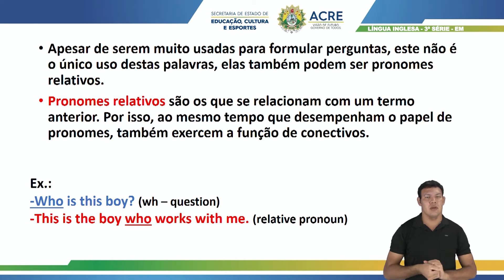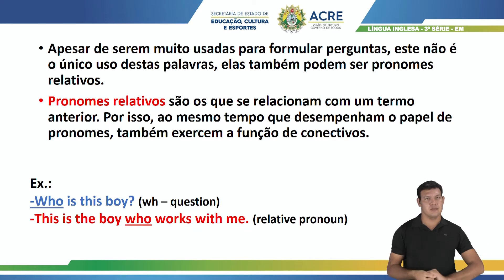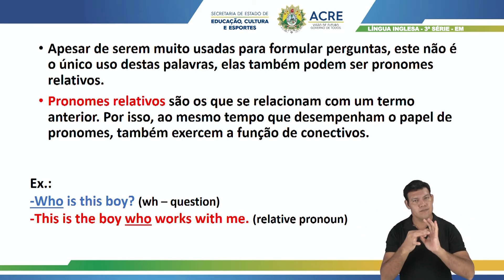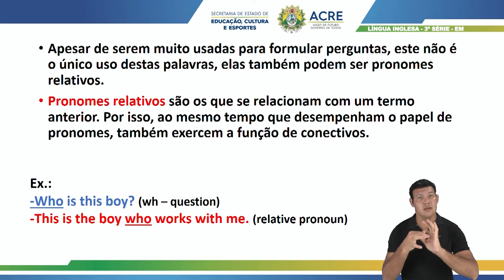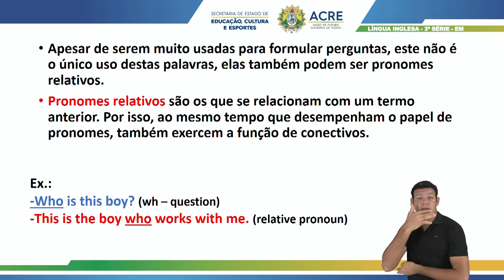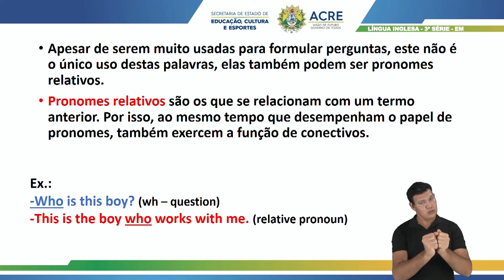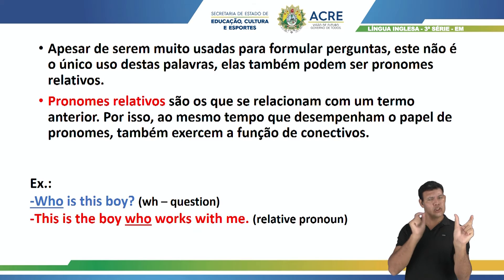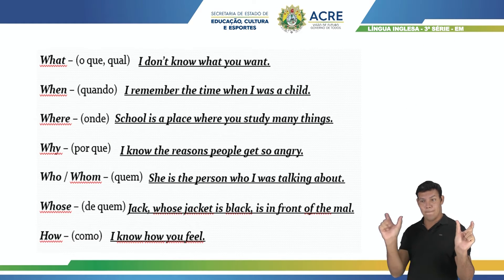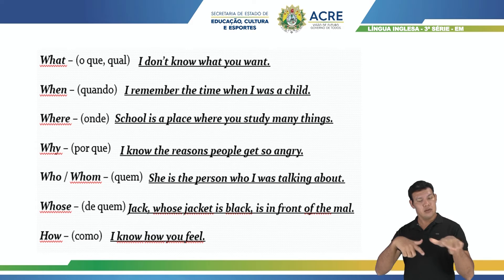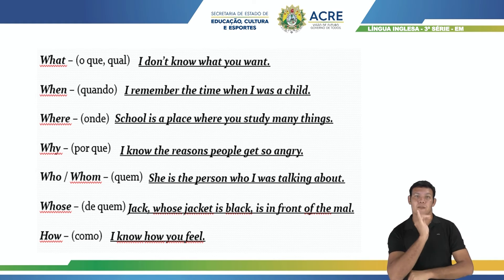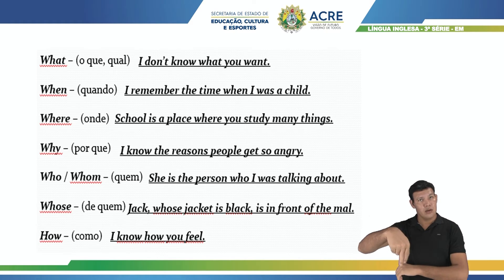Observem: who is this boy? Quem é este garoto? O who está sendo usado para fazer pergunta. Já na segunda frase, ele está ligando duas orações: this is the boy who works with me — este é o garoto que trabalha comigo. Aqui temos alguns exemplos de frases com pronomes relativos. Deem uma pausa e deem uma lida.